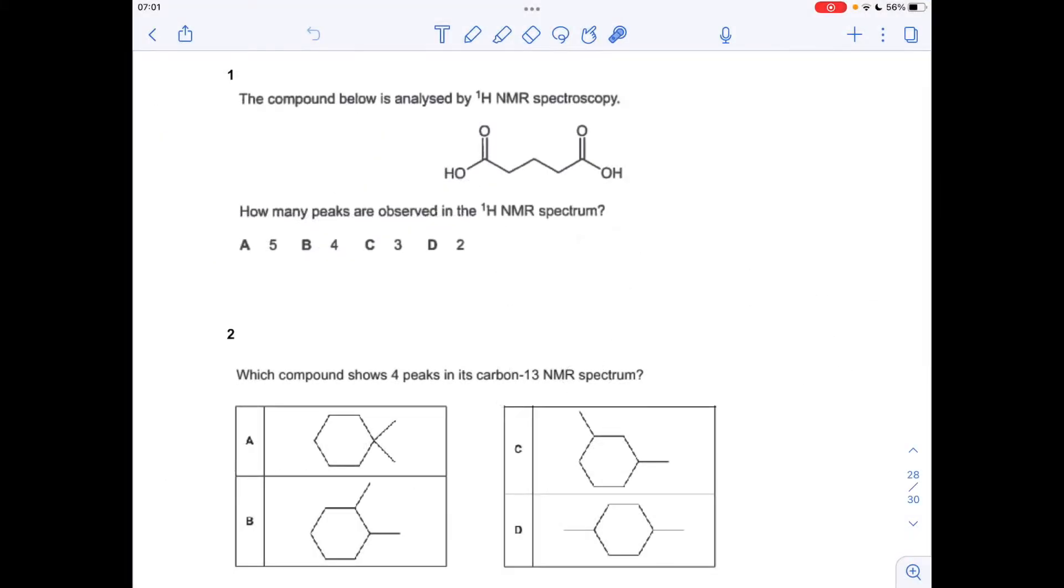Okay, so we'll start with question one. We've got to work out how many peaks will be observed in the proton NMR spectrum for this dicarboxylic acid. We're looking for symmetry to see if we've got equivalent environments. There's a line of symmetry down there, so that makes these two hydrogens equivalent, these two sets of hydrogens equivalent, which leaves a third environment there. So the answer was three.